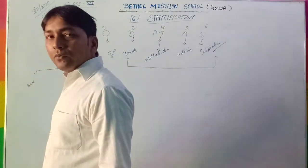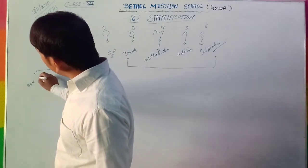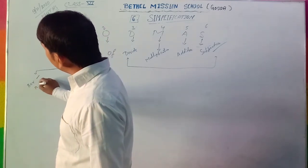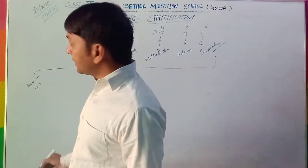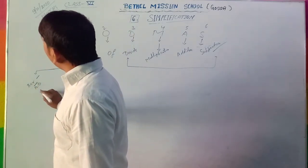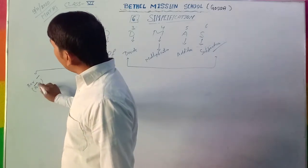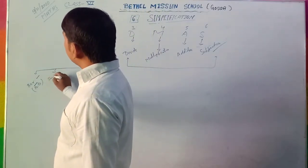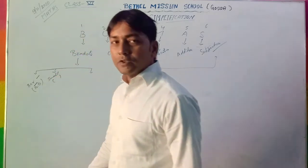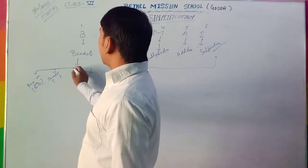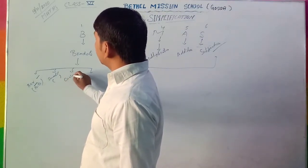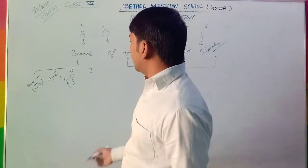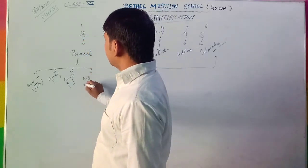First is bar bracket — we denote it with one line on top. Suppose that if written A minus B, a bar is given to the top of A minus B. The second bracket is small bracket, also called round bracket. The third is curly bracket. And at last, big bracket.